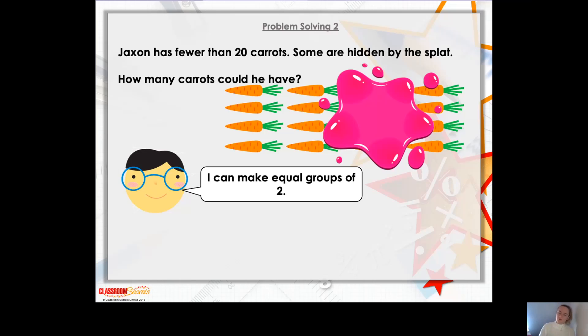So it needs to be more than 12, but less than 20. Well, let's try the next number after 12. Let's try 13. So I'm going to show you some little squares that are representing our carrots.